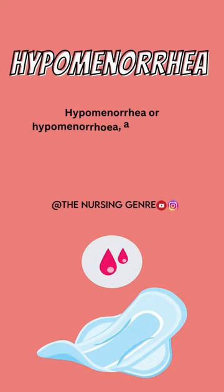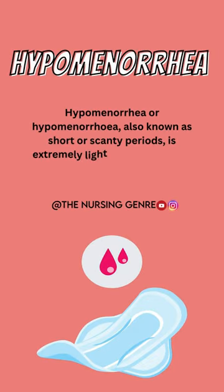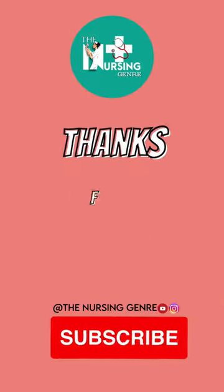6. Hypomenorrhea — light periods, occurring within a 28-day cycle.